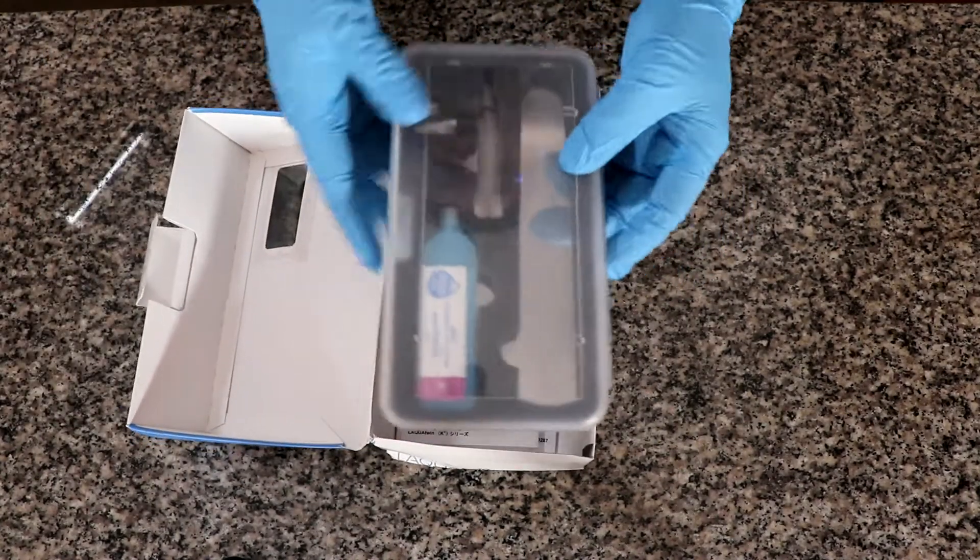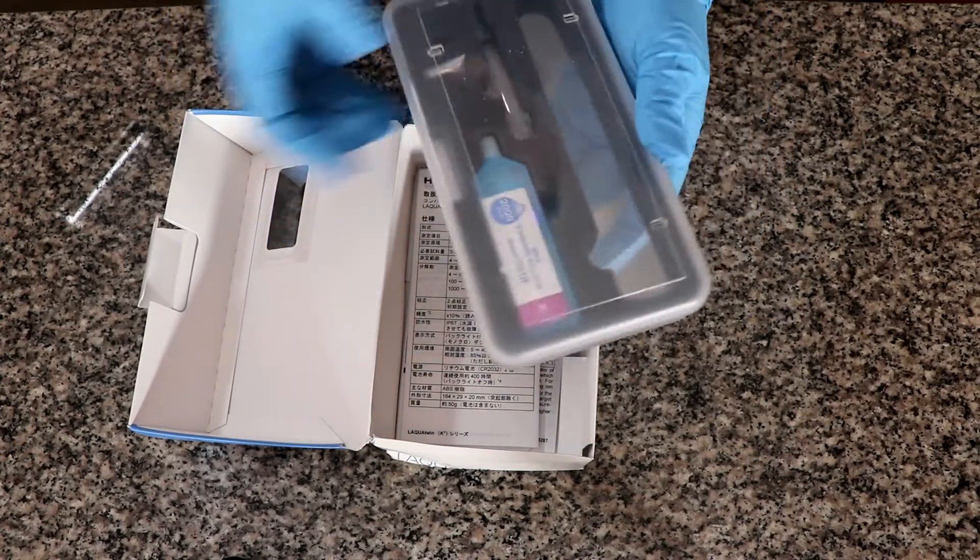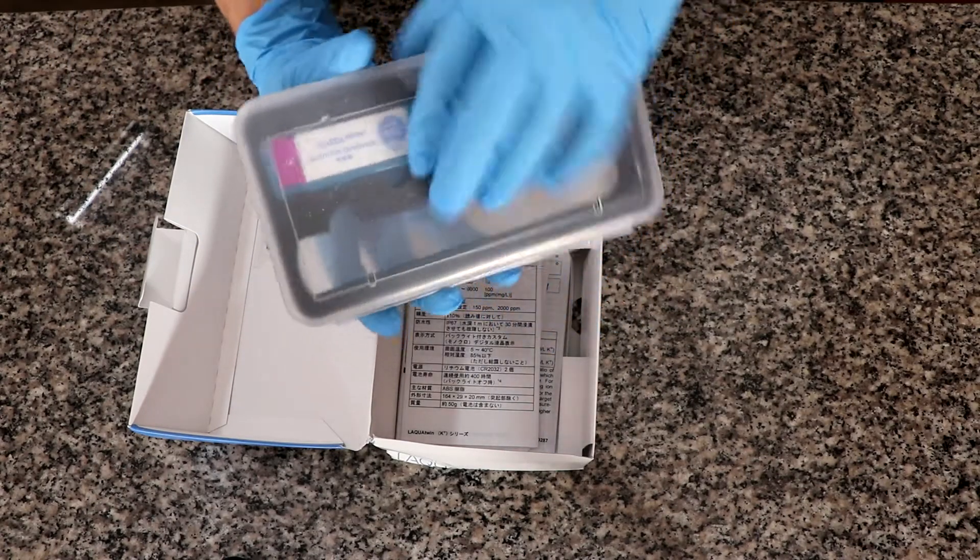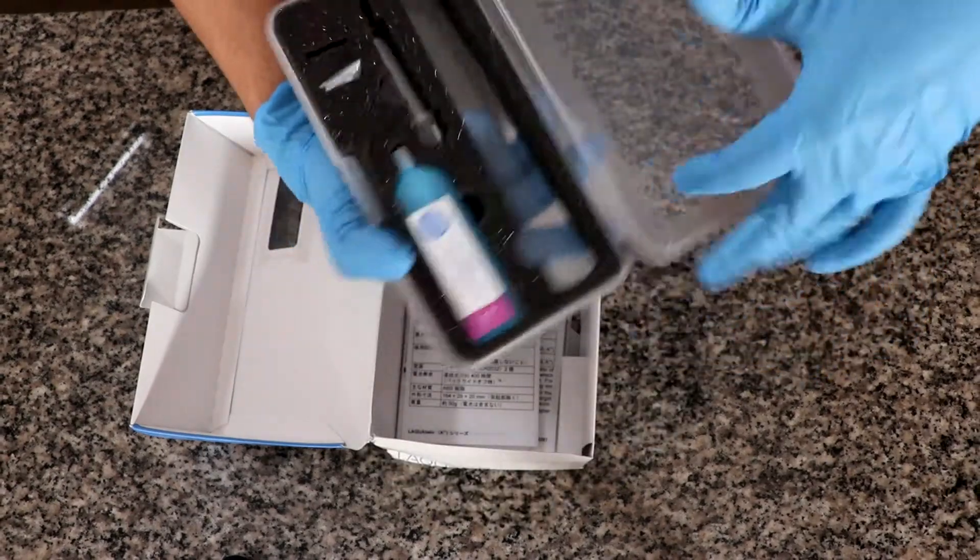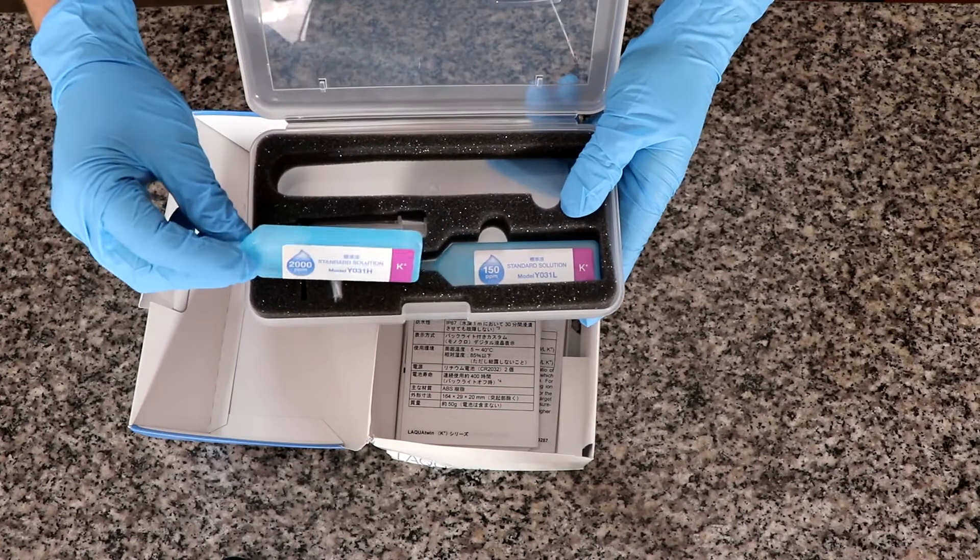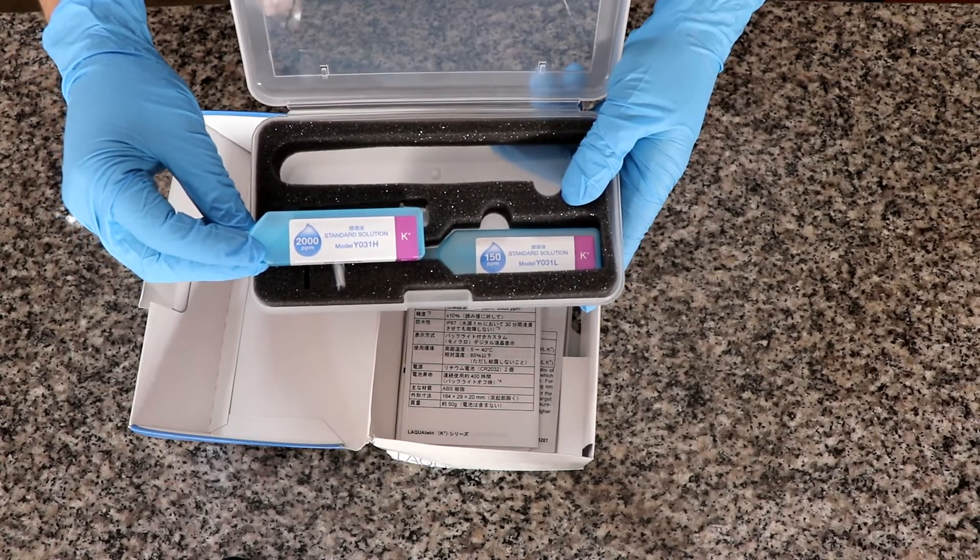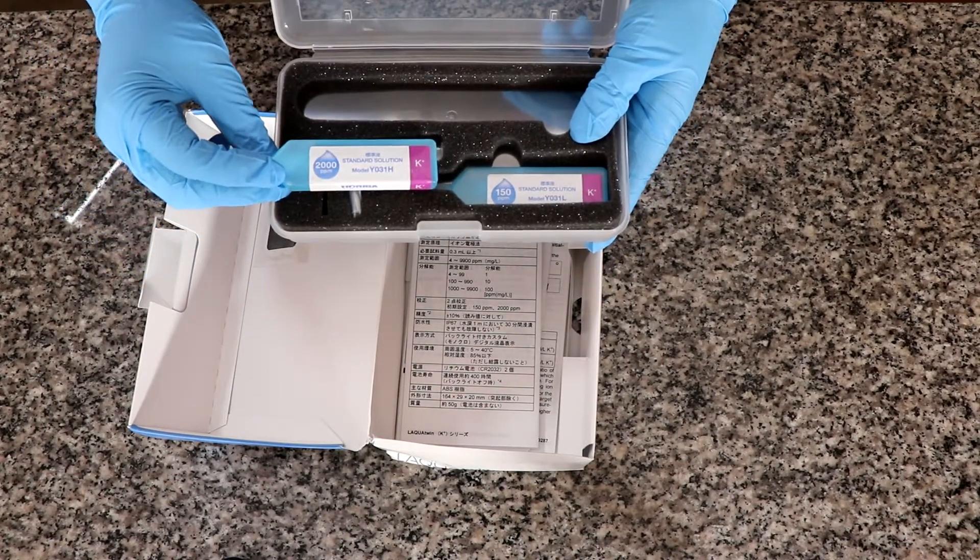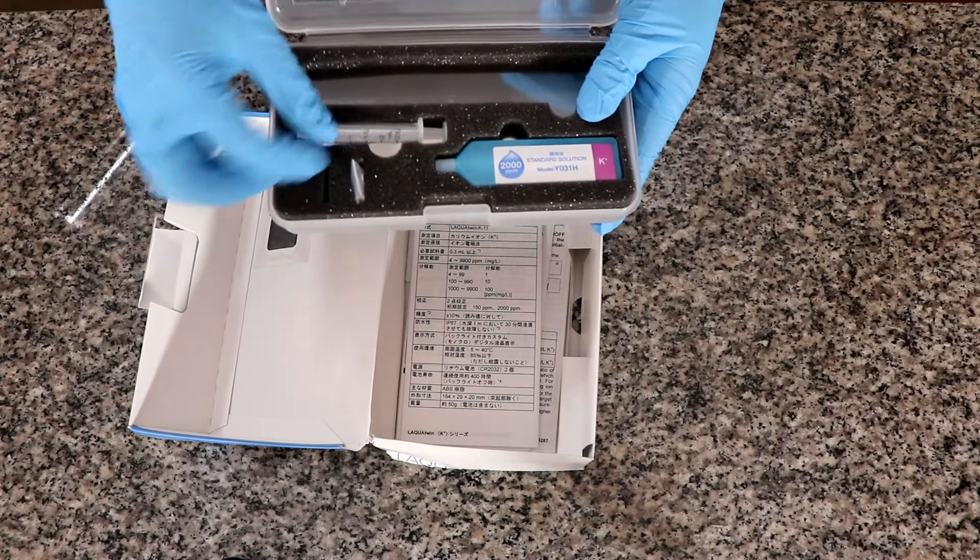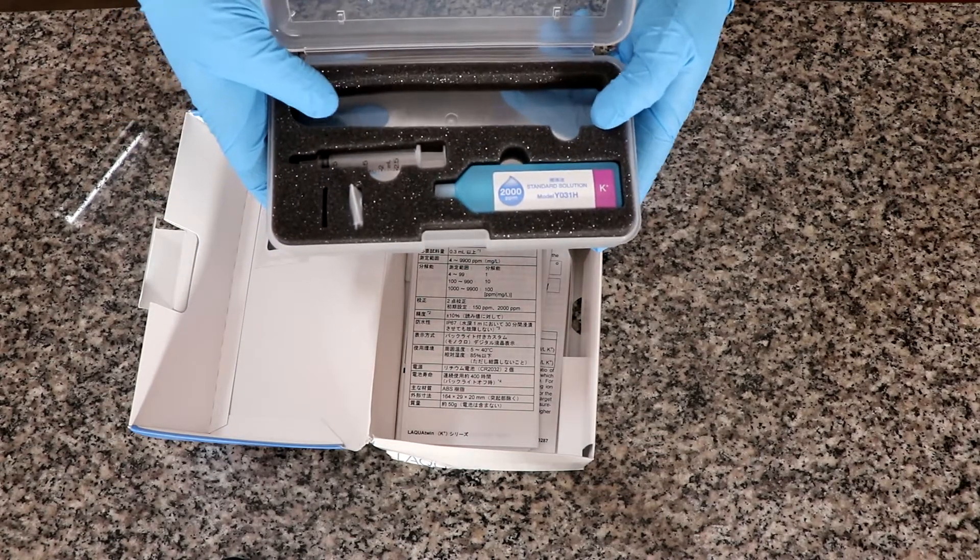We also get this case, which is where we will store the electrode after we assemble it. Inside this case, you can see here, we have the calibrating solutions. We have two to perform a double point calibration and then we have the syringe that we can use for samples and the space for our electrode.